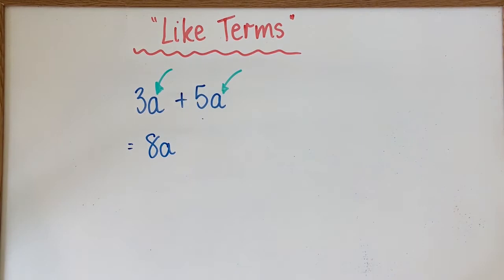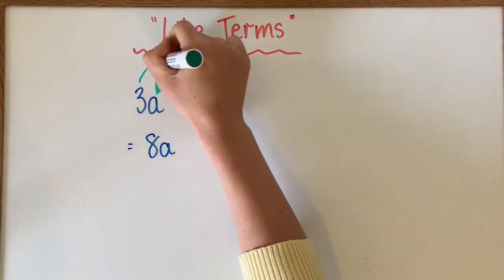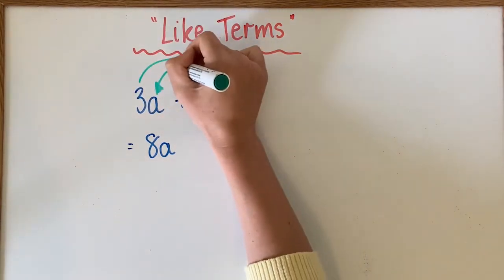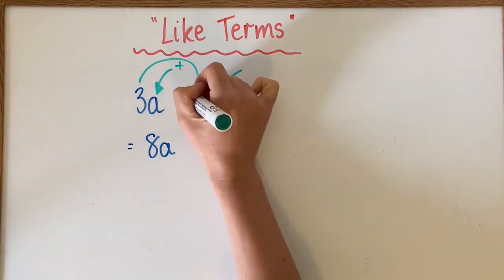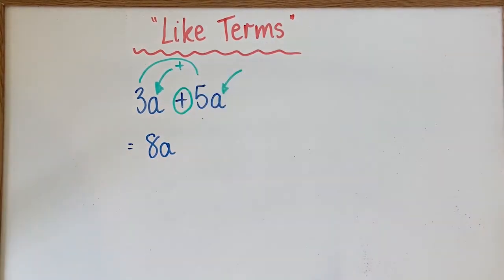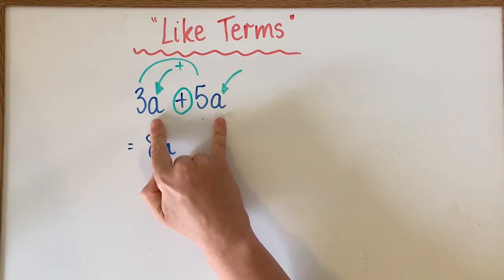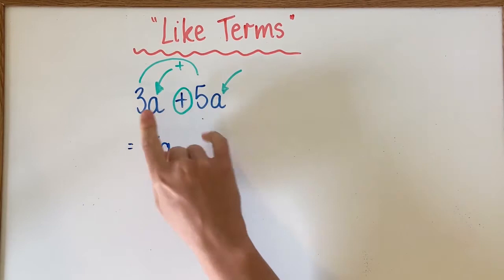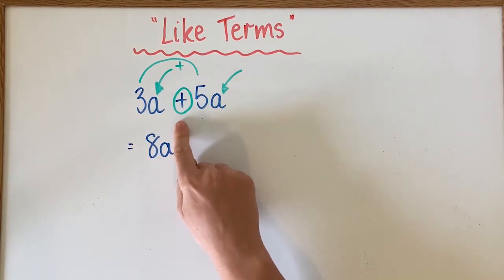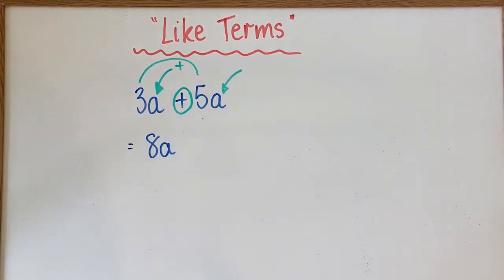What gets added together are the coefficients. The reason I know they're getting added is because of the sign in the middle. So you need to look at the variables to determine if they are alike, then you look at the coefficients and the sign to determine what you do with those numbers.